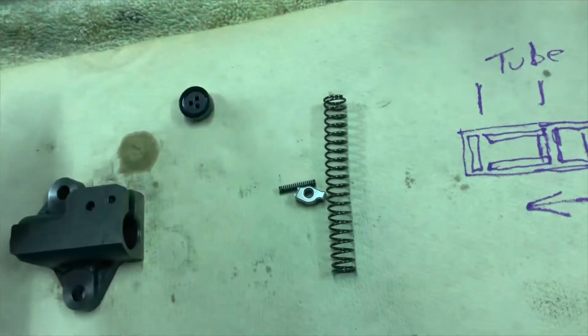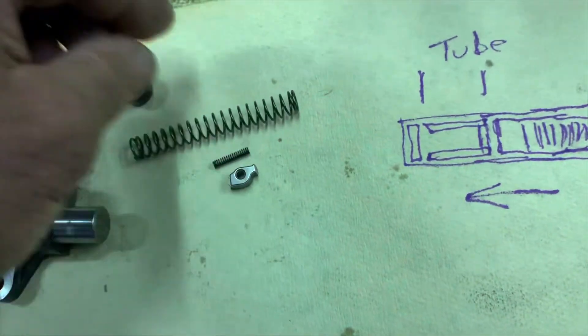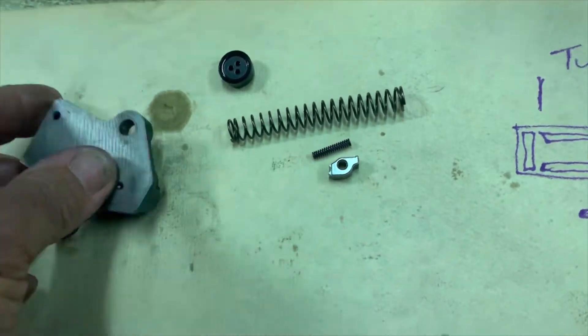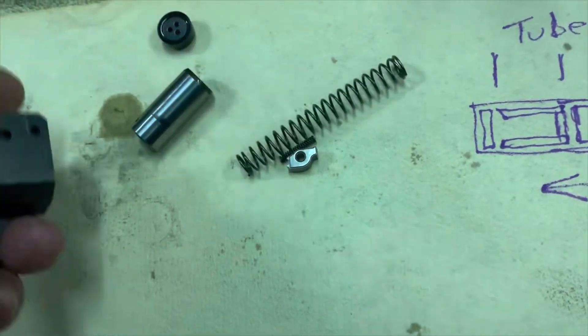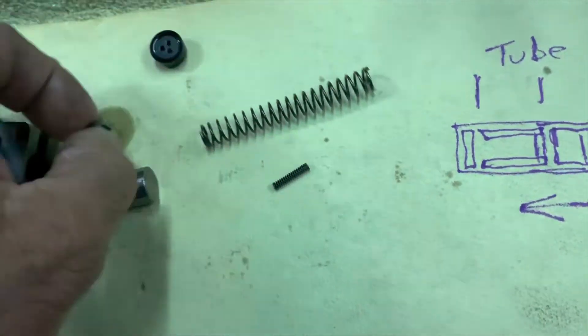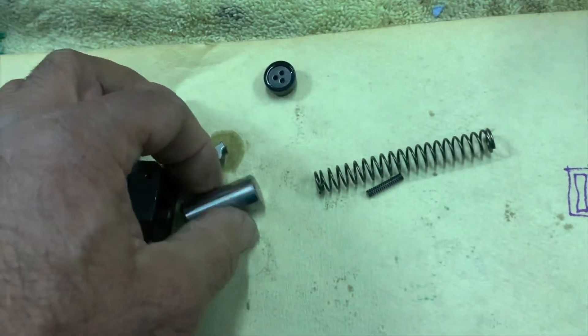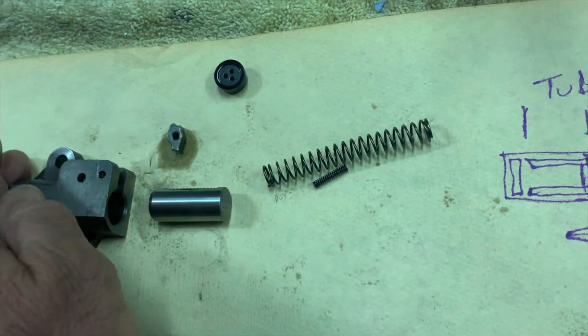So the piston is pushed out by spring pressure, but also obviously oil. So oil enters here, pushes against the piston and pushes that out on a little ratchet mechanism. The ratchet allows the piston to come out, but does not allow it to go back in.